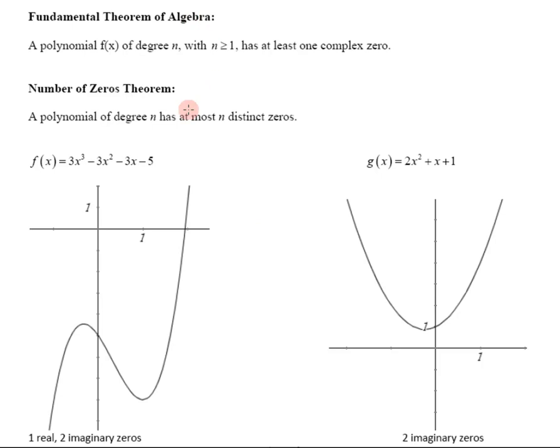Alright, we're going to talk about the fundamental theorem of algebra. It says a polynomial f(x) of degree n, with n being greater than or equal to 1, has at least one complex zero.